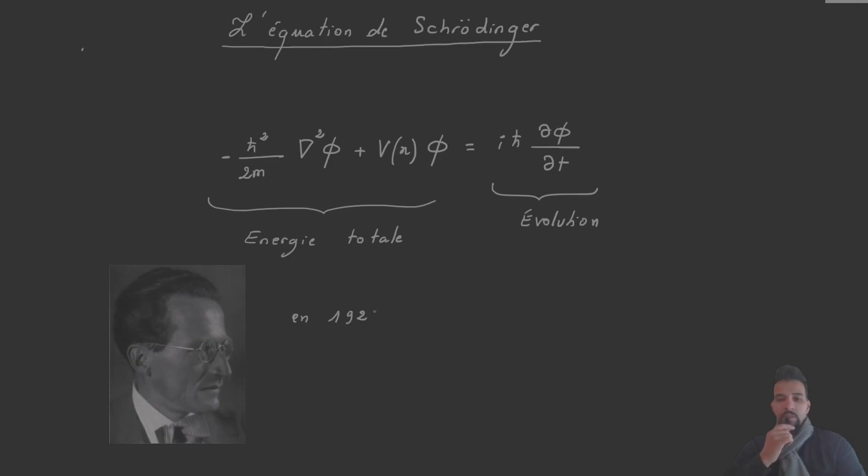Formulated in 1926 by Austrian physicist Erwin Schrödinger, it constitutes a cornerstone of modern physics.